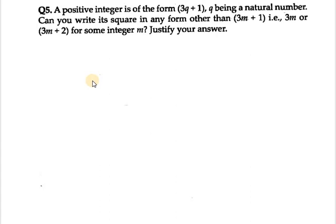In this case, we are given that we need to check whether we can write 3q plus 1 in the form of 3m or 3m plus 2 or 3m plus 1. So in this case, we would be using Euclid's division lemma, that is a equals bq plus r, and b in this case is 3, and r lies between 0 and b.